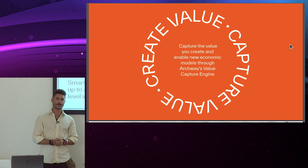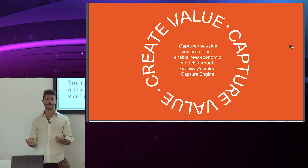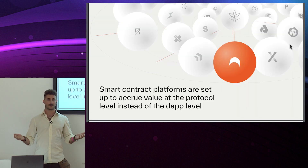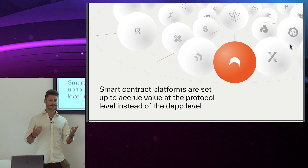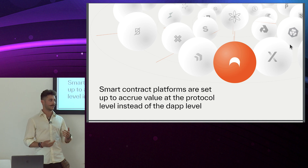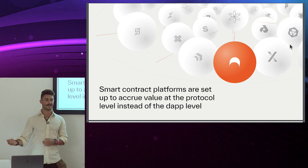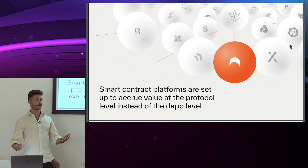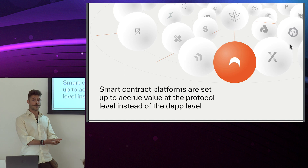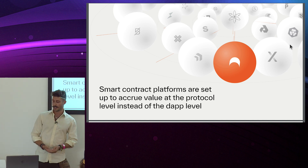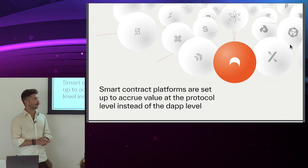This is also discrepant with what we've seen in web2. You came to Prague, you booked your Airbnb — at the end of the day, Airbnb is the app that captures the value, not the HTTPS protocol or TCP/IP. So even in web2, it makes sense that the application itself captures the value. That's where Archway fits.